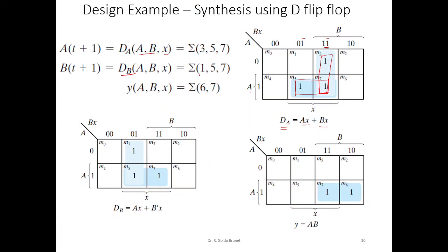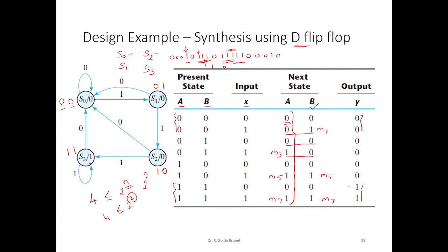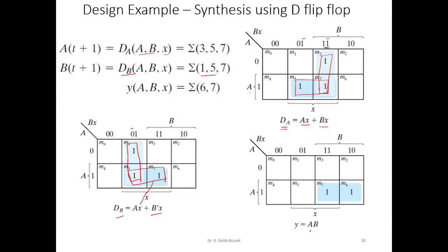From the Karnaugh map groupings: these two ones represent BX (where A varies), and these two ones represent AX (where A is fixed and X is fixed). So DA = AX + BX. Similarly, for flip-flop B, the input equation uses minterms M1, M5, and M7. We can combine those ones to get DB = AX + B̄X. The output Y is one only when in state S3, giving minterms M6 and M7, so Y = AB.